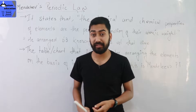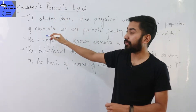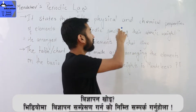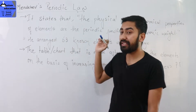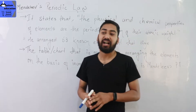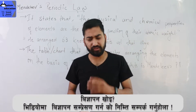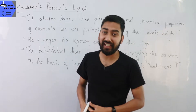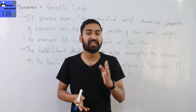Now we will talk about the Mendeleev's Periodic Law. What is the Mendeleev's Periodic Law? It states that the physical and chemical properties of the elements are the periodic function of their atomic weight, or atomic mass. That is the Mendeleev's Periodic Law.